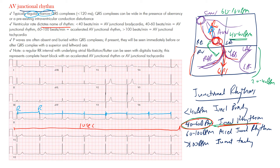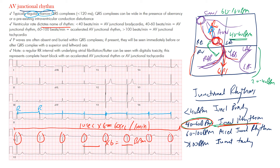To find the rate, remember that a standard 12-lead EKG is 10 seconds. Multiplying by six gives 60 seconds — one minute. Count the complexes across the strip and multiply by six. Here we count one, two, three, four, five, six, seven, eight — so eight times six equals 48 bpm. That falls within the 40–60 bpm range, confirming this is an AV junctional rhythm.